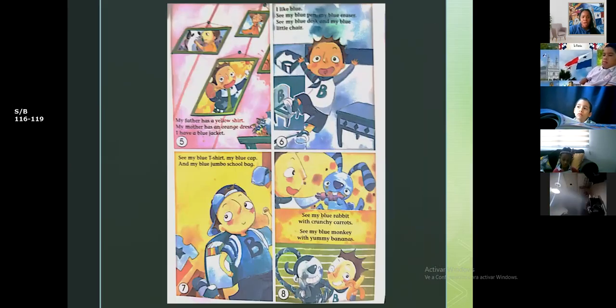My father has a yellow shirt and my mother has an orange dress. I have a blue jacket. I like blue. See my blue pen, my blue eraser, see my blue desk and my blue chair. See my blue t-shirt, my blue cap and my blue jumbo school bag. See my blue rabbit with crunchy carrots, see my blue monkey with the yummy bananas.